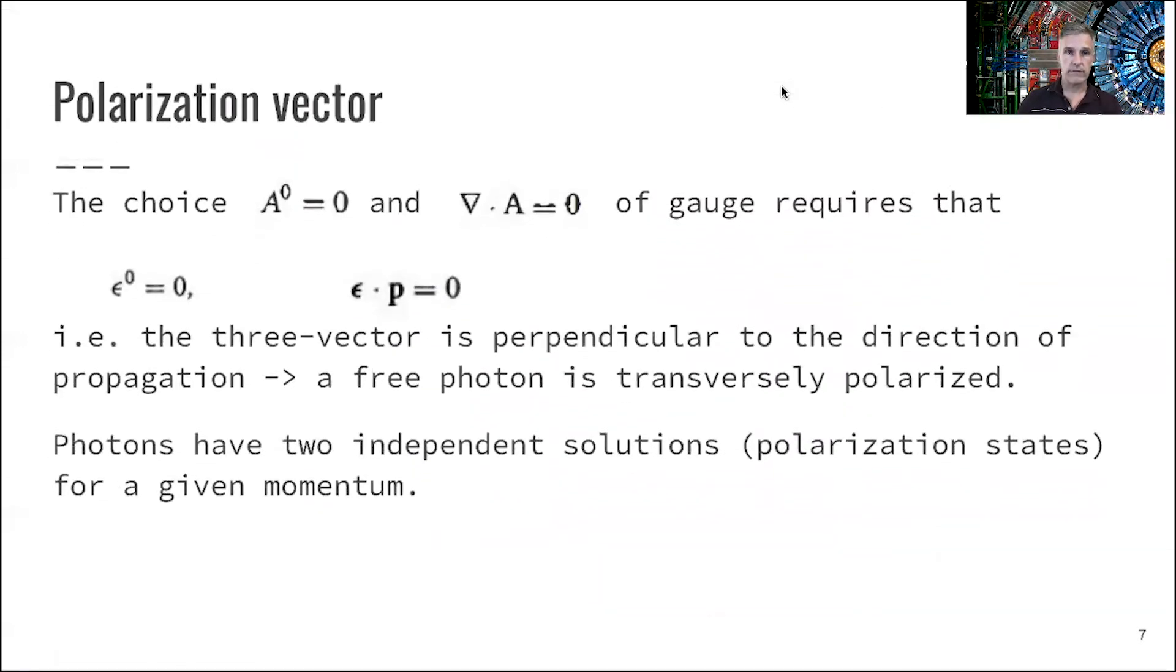One more word on the polarization vector. So the choice we just made, I'm rewriting the choice here, this is our Coulomb gauge, requires that the zero component of our polarization vector is zero, and that the polarization vector is orthogonal to the momentum vector. So in principle, you have the three vector. The three vector is perpendicular to the direction of motion, and that allows us to find two polarization states which are independent of each other. So different to our electrons before now, we don't have four states. You only have two states as independent solutions for a given momentum.